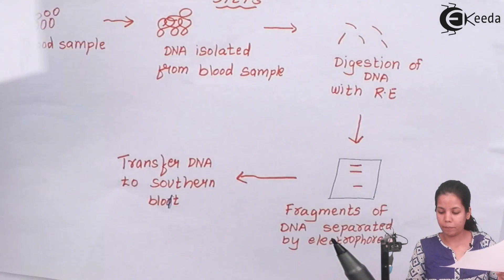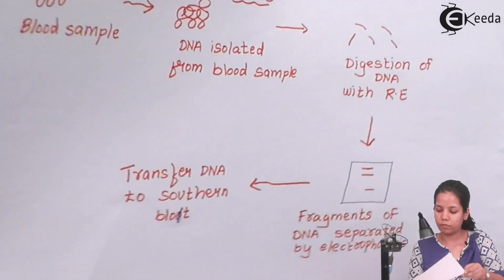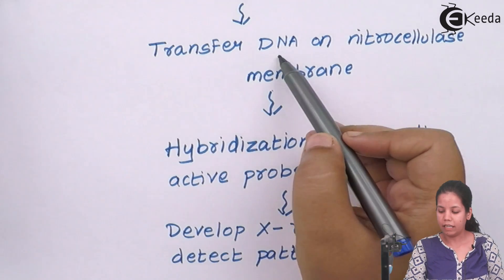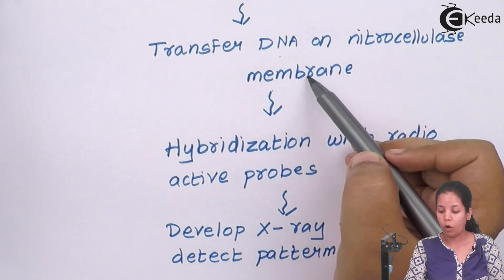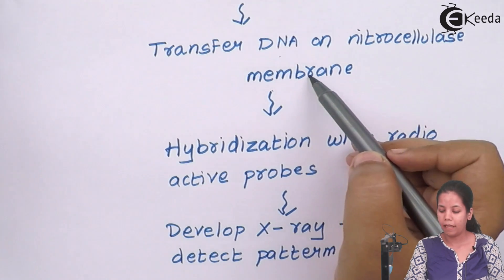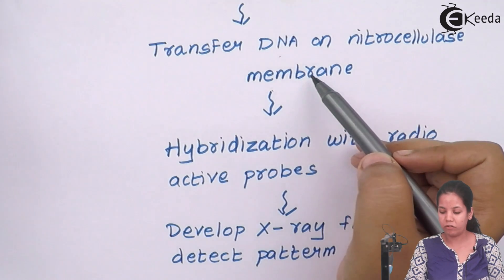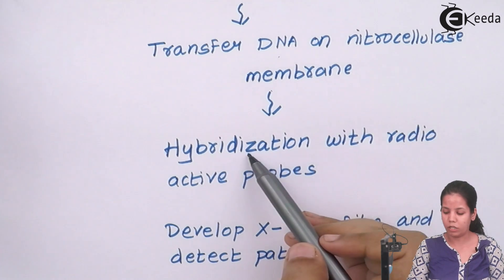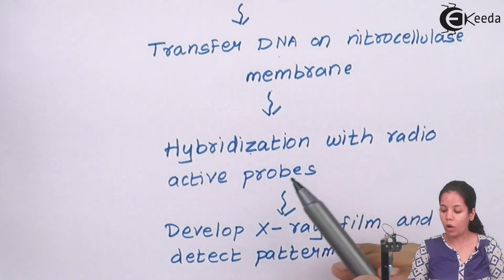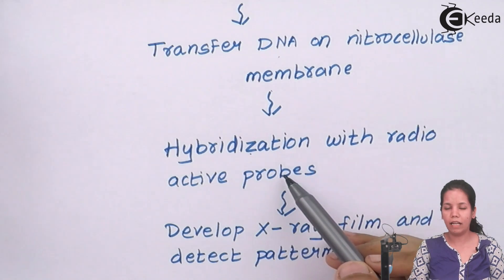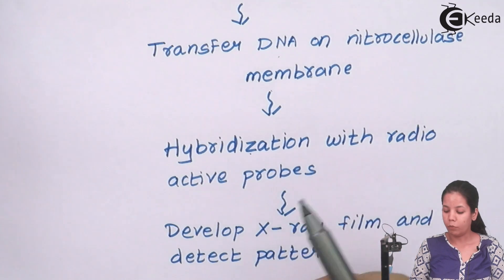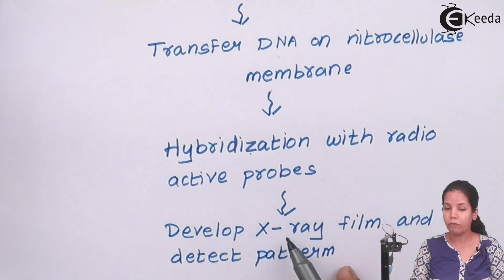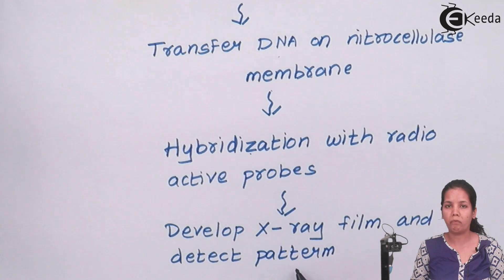Now after this, transfer the DNA on nitrocellulose membrane, or basically copying the DNA. And now after the technique of transferring the DNA or Southern blotting, this DNA is subjected to hybridization with radioactive probes. That is the coloring step. And after coloring with radioactive probes, we develop an x-ray film and detect the pattern of DNA or DNA fingerprinting.